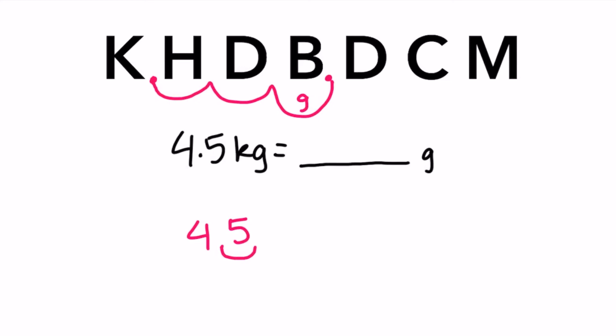and we move our decimal one, two, three times to the right, filling in our empty spaces now with zeros. Our answer is 4,500 grams.